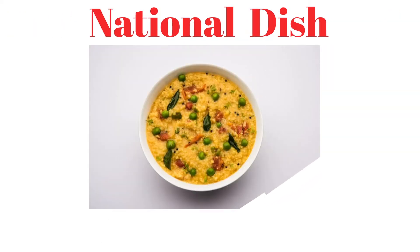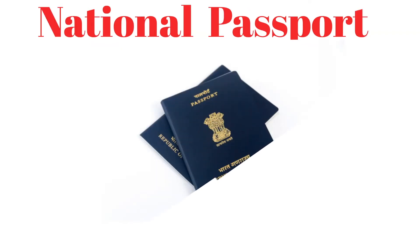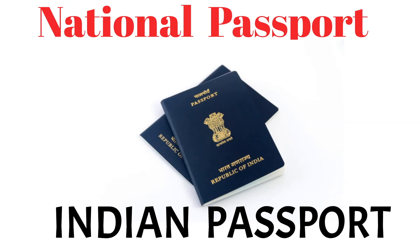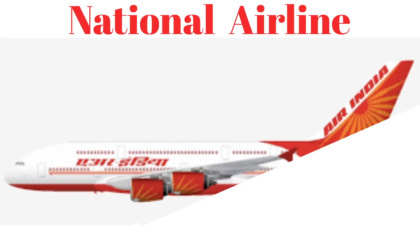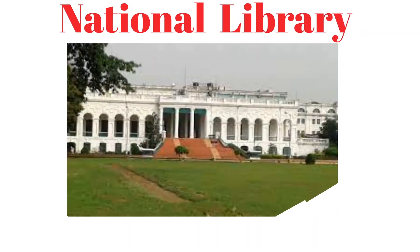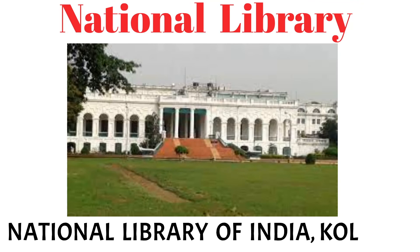National dish. Our national dish is khichdi. National passport. Our national passport is called as Indian passport. National airline. Our national airline is Air India. National library. Our national library name is National Library of India situated in Kolkata.